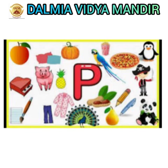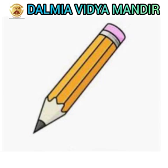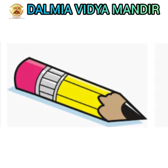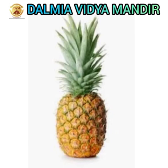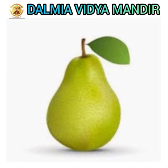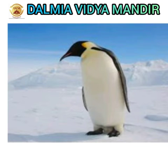Now we are going to learn the objects that start from the letter P. This is P for pencil — say P for pencil. Very good. And P for pineapple. And P for pear. And P for penguin. Next, we are going to learn the letter Q.